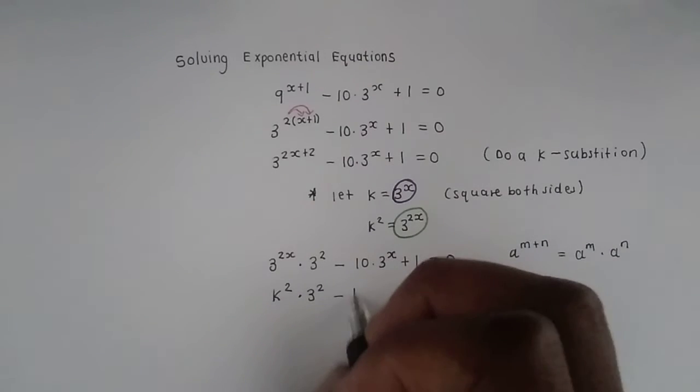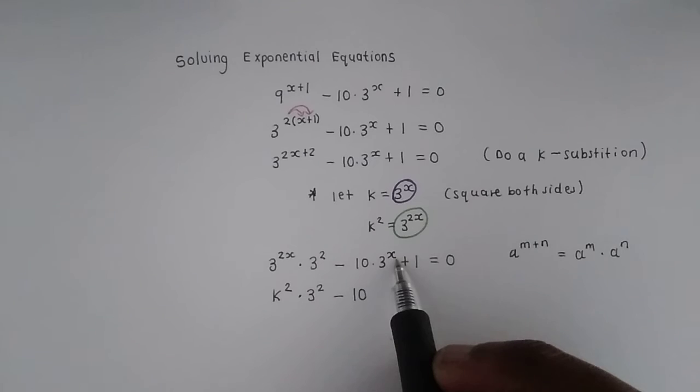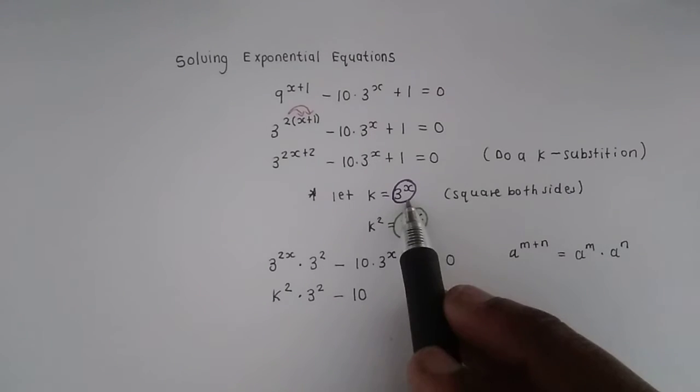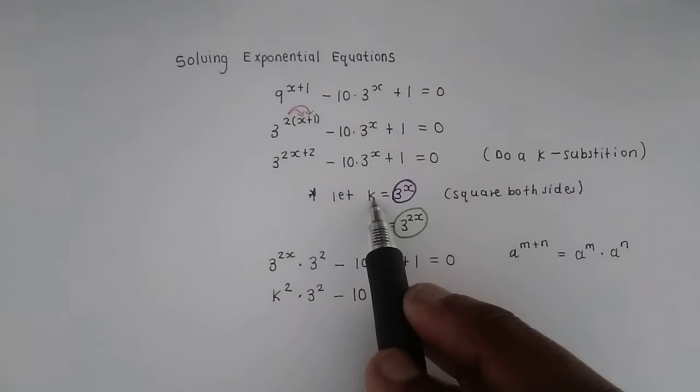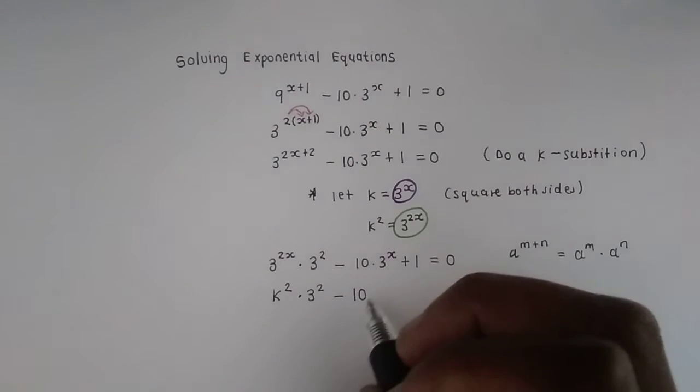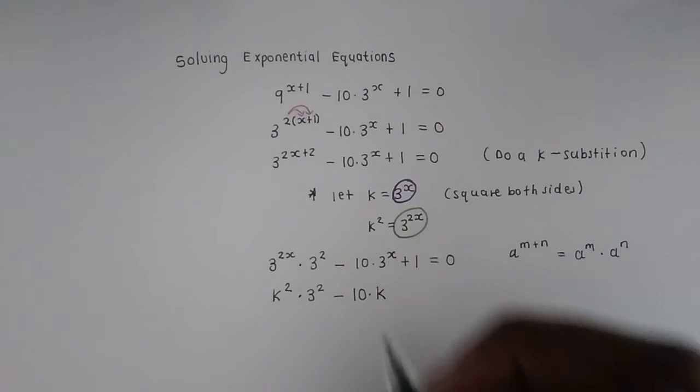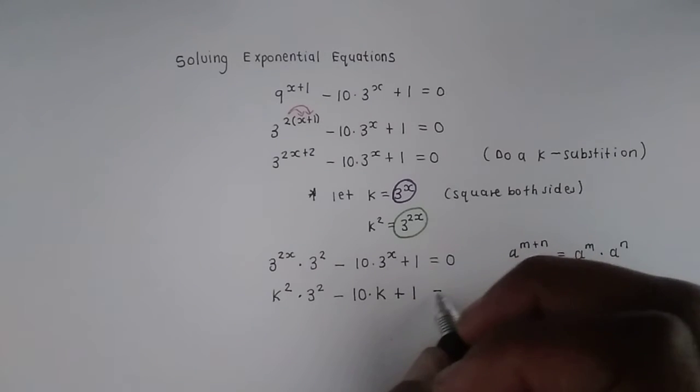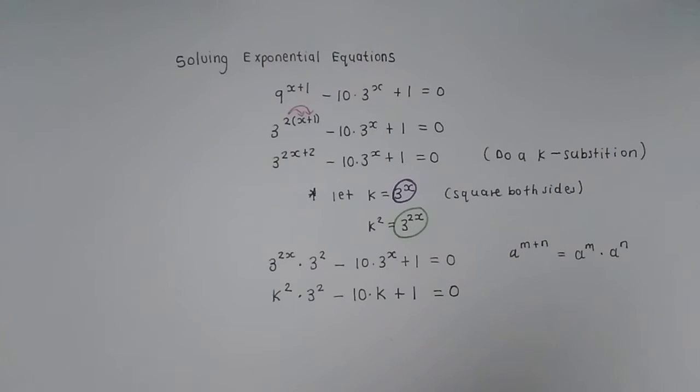We still have 3 squared. Then we have minus 10. The 3 to the x, what did we say we're going to substitute it with? Well, we said we're going to let it be k. So when we see that, we just times it by k. Then we have a plus 1. This must equal 0.